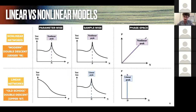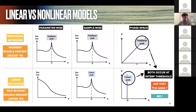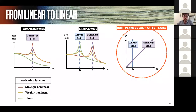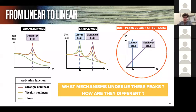Both kinds of overfitting have one thing in common: they both occur at the interpolation threshold exactly. The question is: are they the same thing, due to the same phenomena? The answer we provide is no. With a regression task with a lot of noise and a weakly nonlinear activation function, the sample-wise profile presents two peaks: a linear peak at N equals D — vertical in the phase space — and a nonlinear peak at N equals P, which is diagonal. When the function is purely linear, you only get the N equals D peak; when strongly nonlinear, only the N equals P peak.